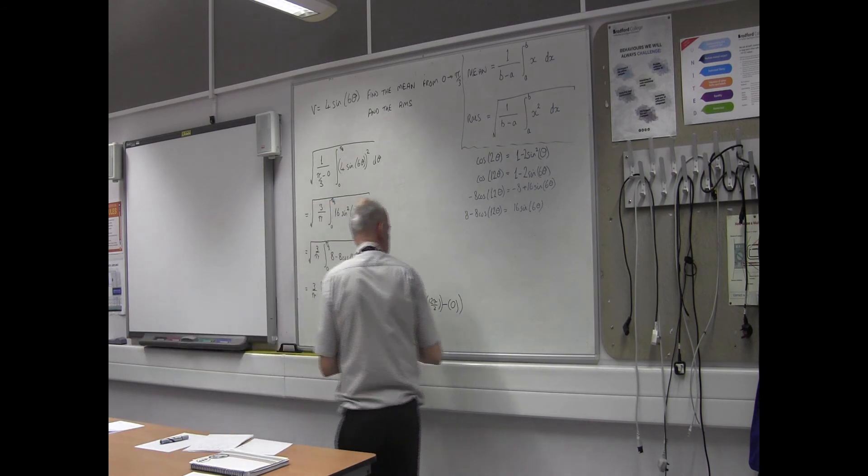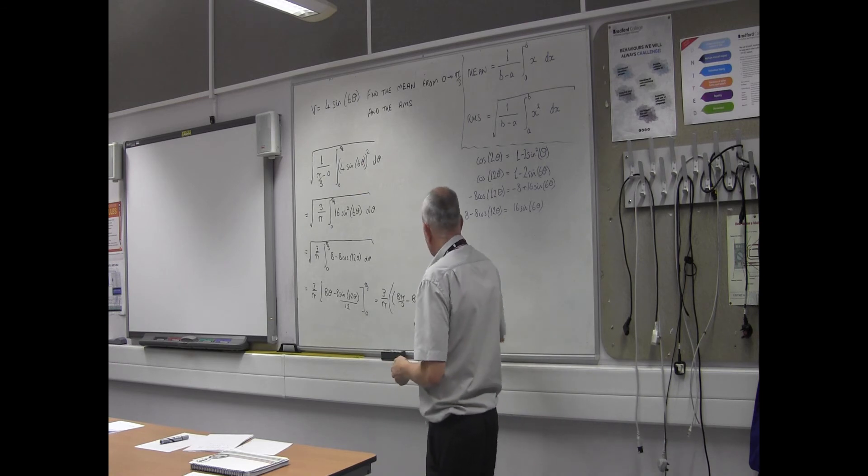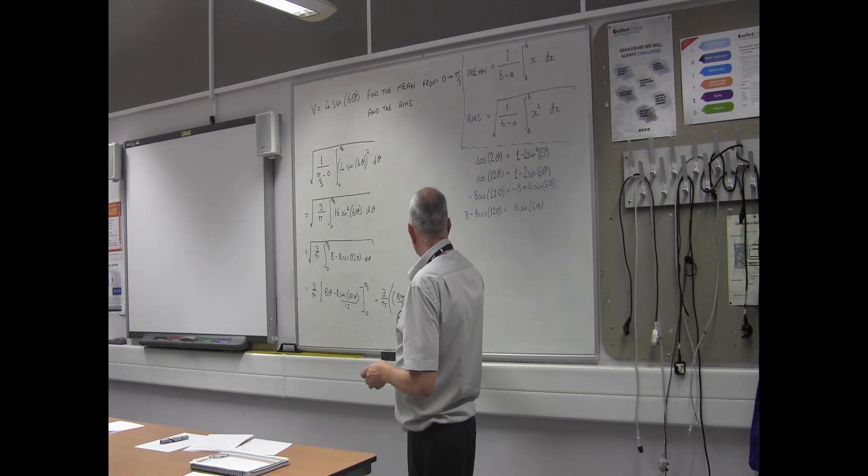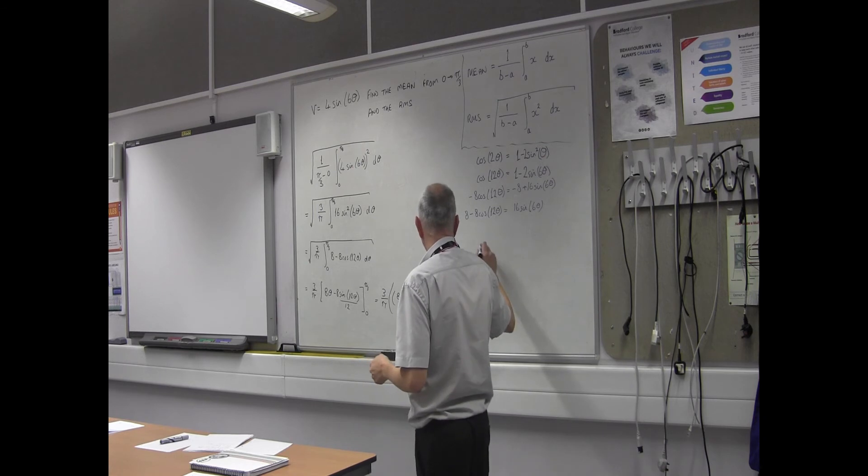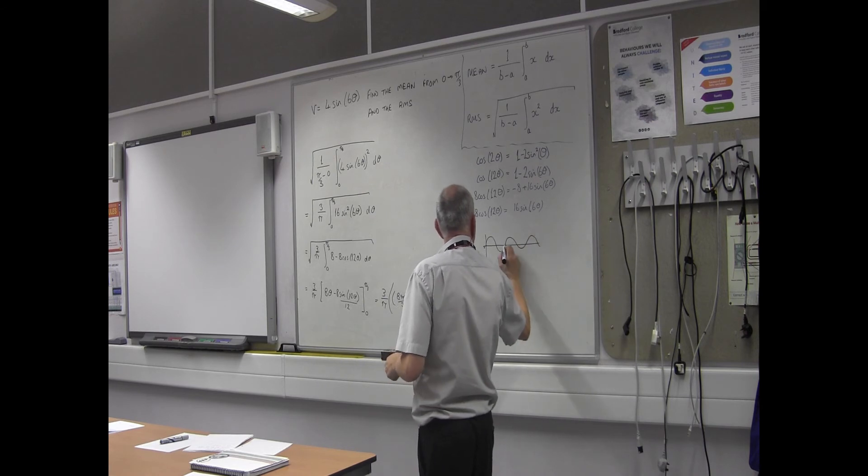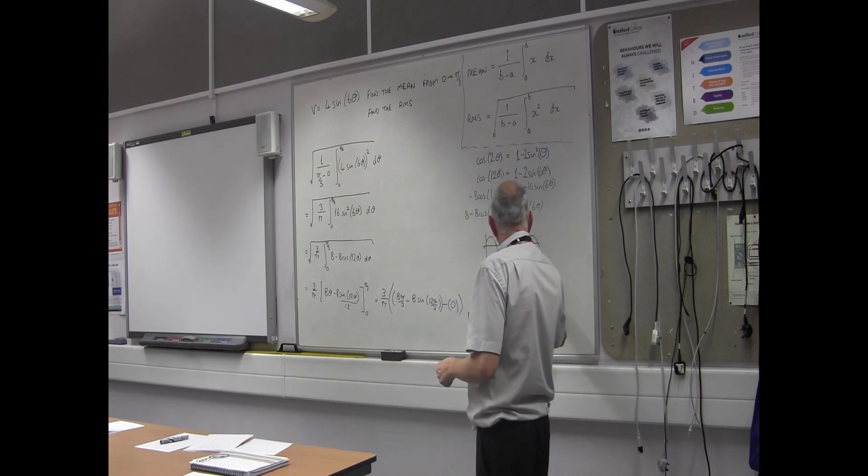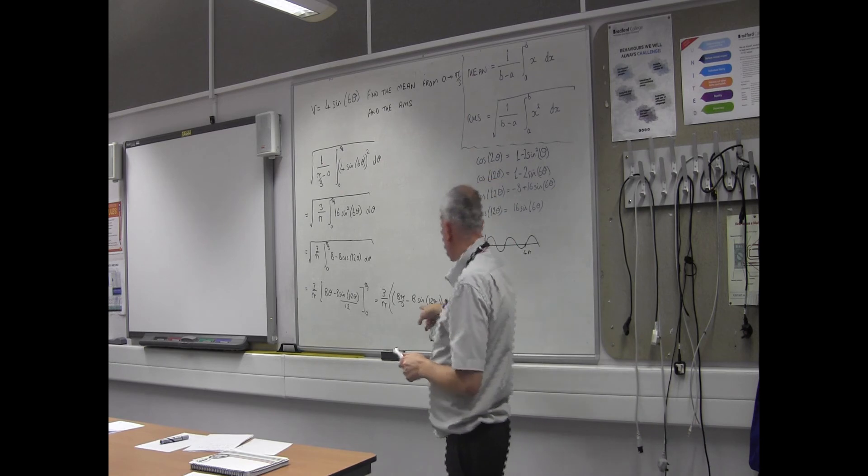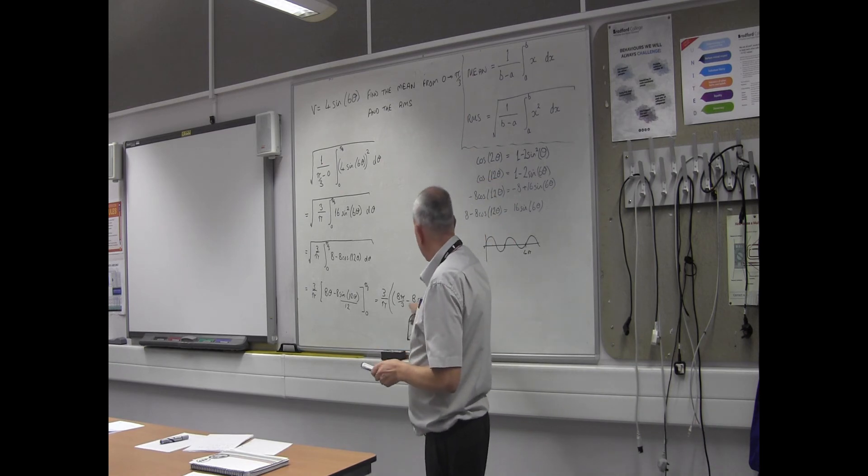We've got that, nearly there. So now, what have we got here? So 12 divided by 3 is going to give you 4π. 4π, if you've got a sine wave, 2π there, 4π there, so it's going to be 0. So that's going to be 0 as well.